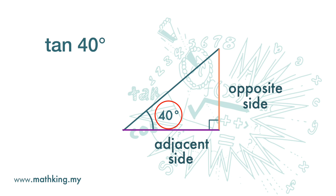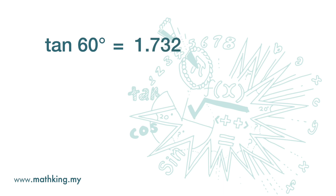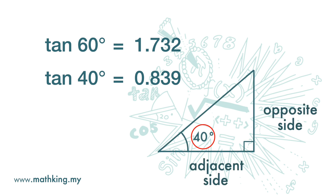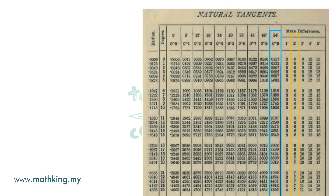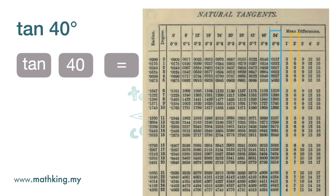Different angles have different values for their ratios. For example, tangent 60 degrees is 1.732, while tangent 40 degrees is 0.839, rounded to 3 decimal places. Tangent 40 means that when the angle is 40 degrees, the ratio of the opposite side to the adjacent side is 0.839. We do not have to memorize these values. In the olden days, we could find them from a table; these days we can find them using a calculator. For example, to find the value of tangent 40 degrees, we just punch in: tangent, 40, equals, and we get the value.